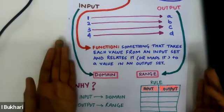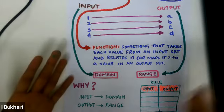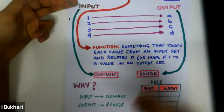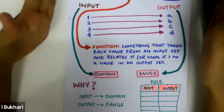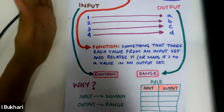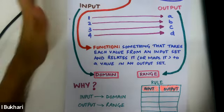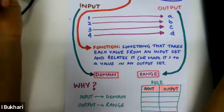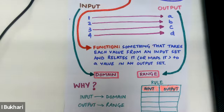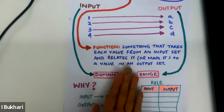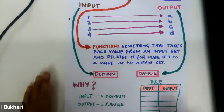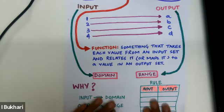Why are they named domain and range? Before explaining, here's a tip: usually in exams you have a table where the input is always on one row, the output on the other row, and the function is written as a rule on top.